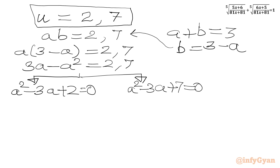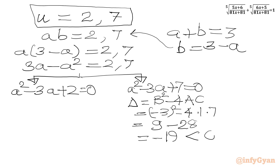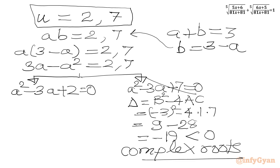We start with the second equation a²−3a+7=0. Its discriminant is 9−28=−19, which is negative, so it gives no real solutions. The first equation a²−3a+2=0 can easily be factorized as (a−1)(a−2)=0.